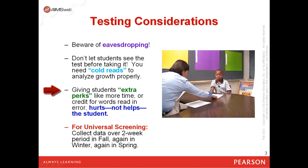Similarly, giving students extra perks like more time or credit for words read in error hurts, not helps, the student. In this case, students might perform higher than they otherwise would and, as a result, not be identified for the proper Tier 2 or Tier 3 services they would otherwise be eligible to receive.